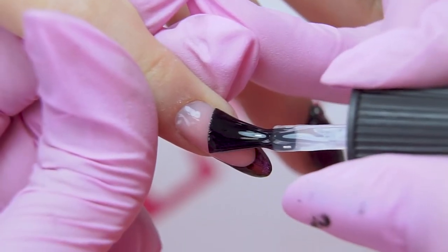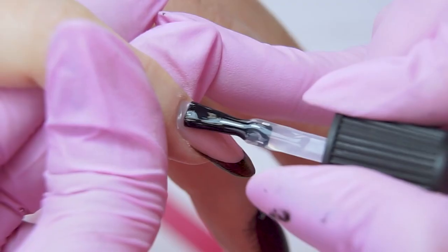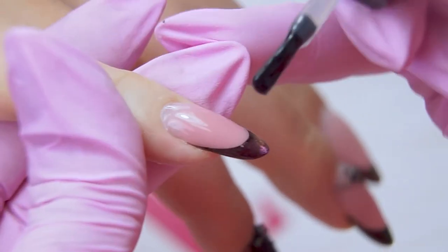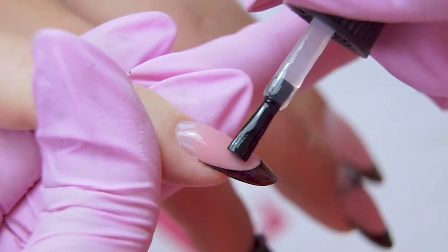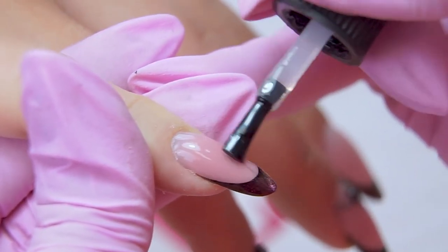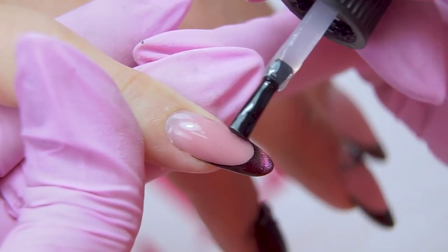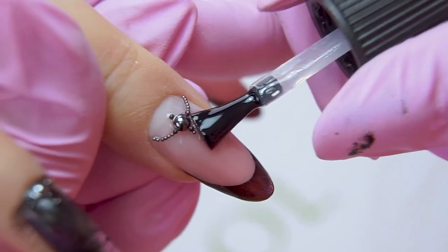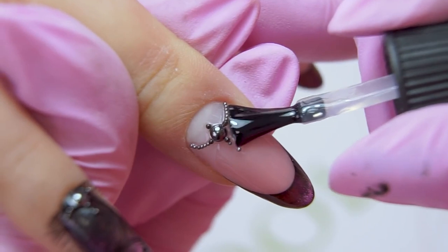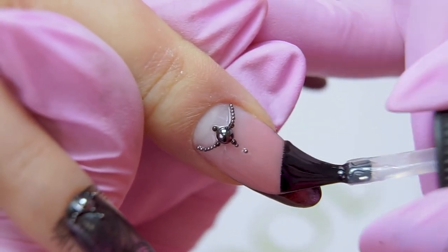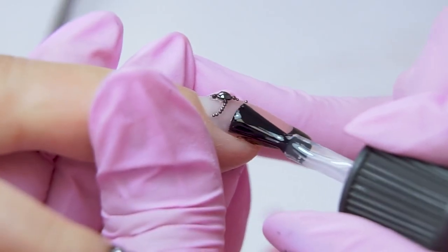I apply a top coat and align it a little bit, making sure there is no layering, because our French is pretty thick with two layers of gel polish, so check the highlights. I can cover up the beads with a top coat, but I don't touch the pearl, so that it doesn't lose its shine.